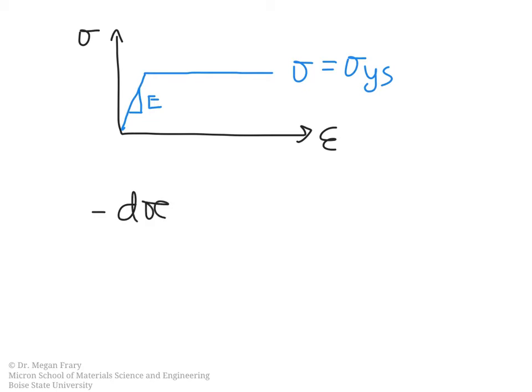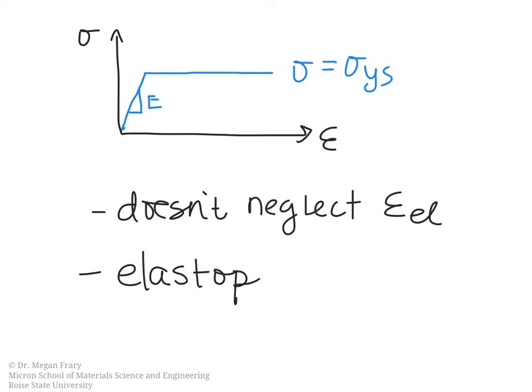And here we have some slope that's given by the Young's modulus. So the features of this model is that it does not neglect the elastic strain. It includes it. And this model is what we would call elasto-plastic, because it includes both, although the plastic region is still not showing any work hardening.